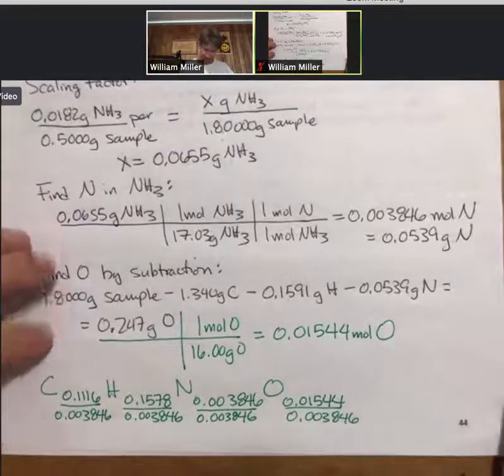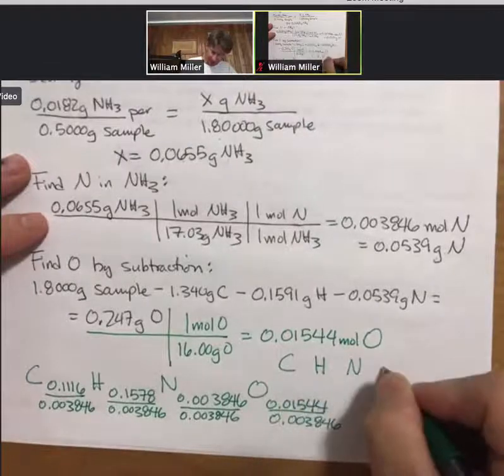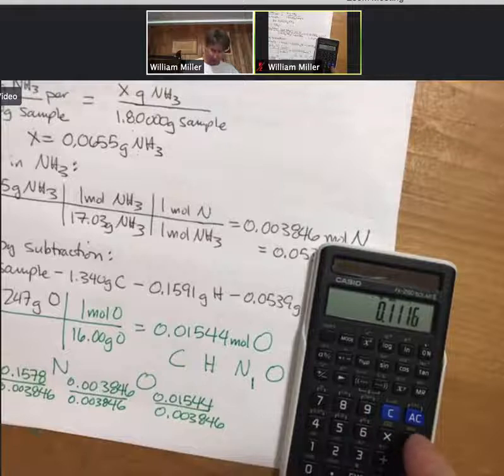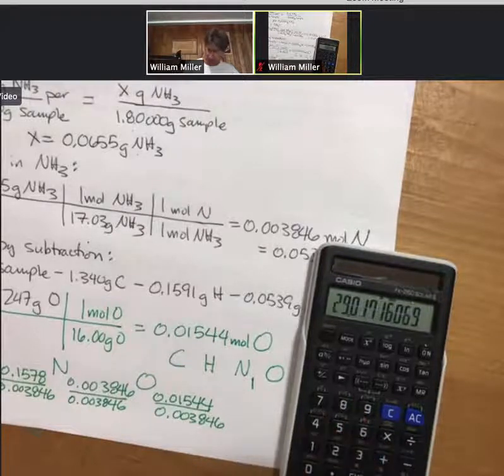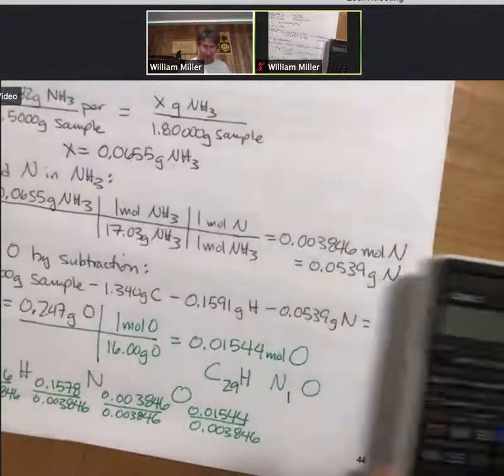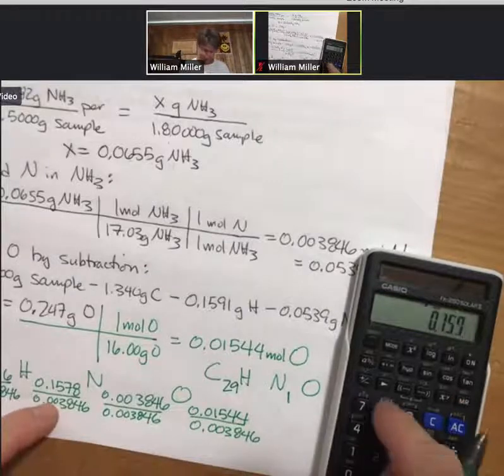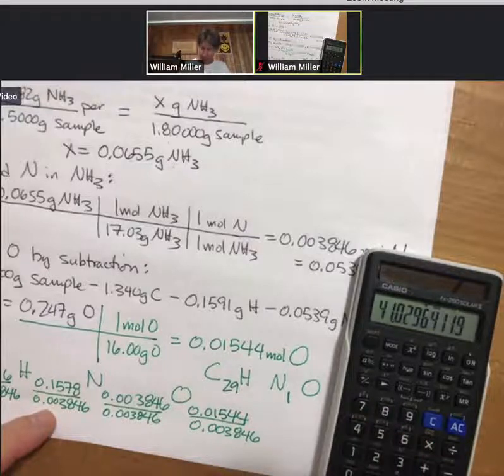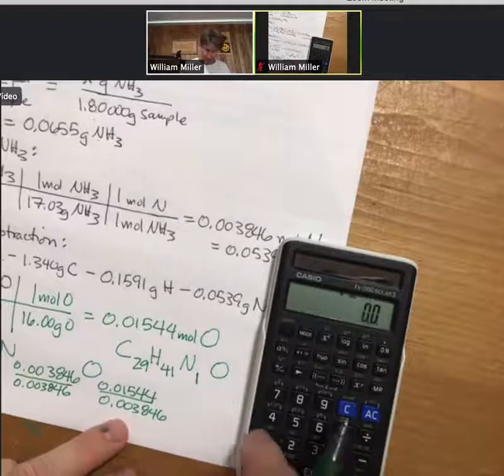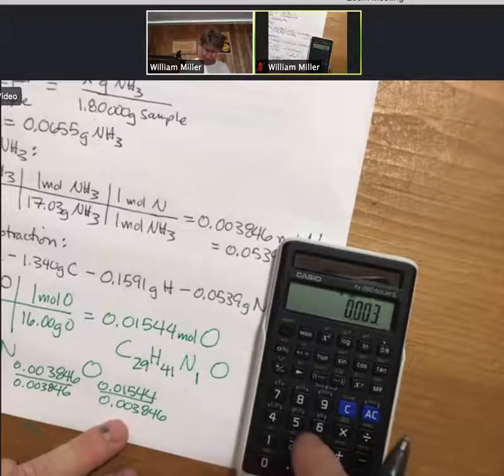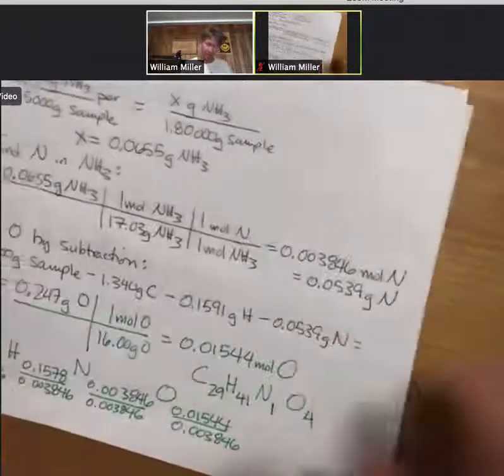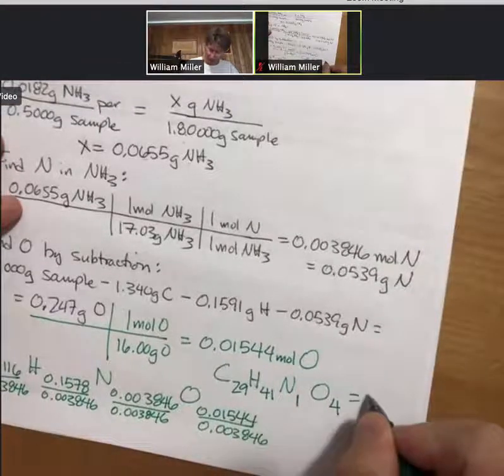So now let's multiply this out. So C, H, N, O. I know my N is going to be 1.1116 divided by 0.003846. I get 29.02. That's going to be 29. Now I'll show my hydrogen here. 0.1578 divided by 0.003846, 41.03, that's going to be 41. 0.01544 divided by 0.003846, 4.01. So that's going to be a 4. So yes, even though the numbers looked very strange, we did get a small whole number ratio for our empirical formula.